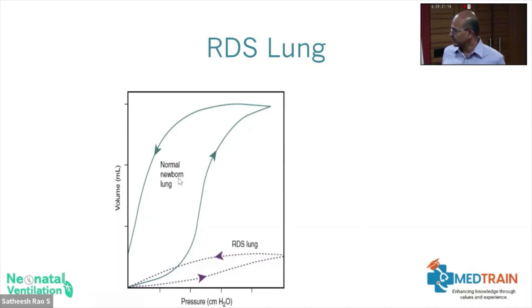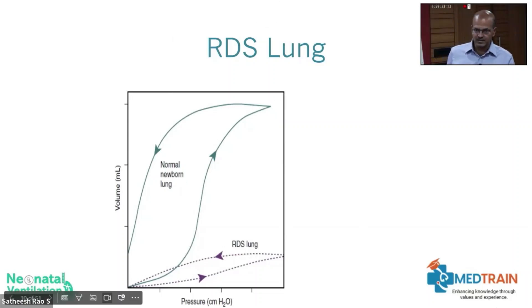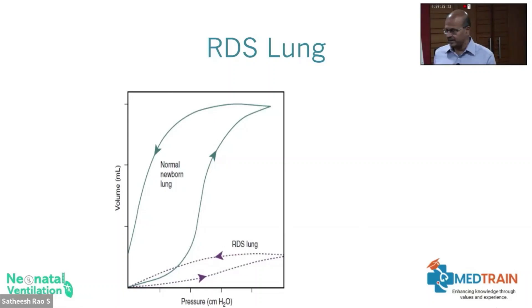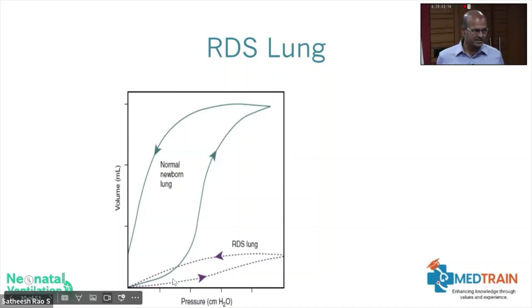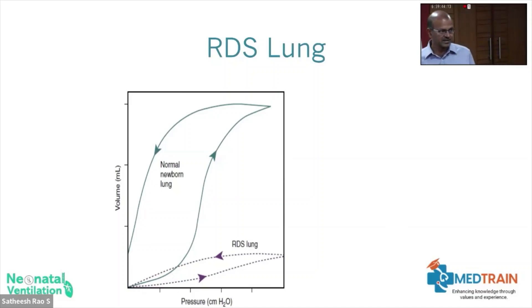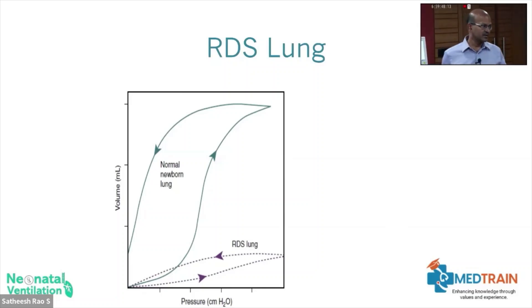Beaking on the pressure-volume loop is one sign of over-distension to watch for. We will look at other aspects of the loop tomorrow. The aim is to stay in the normal range; PEEP should be matched to lung stiffness. Don't delay surfactant in RDS or secondary surfactant deficiency — if the lung is struggling, support it early so you come into the normal range quickly.